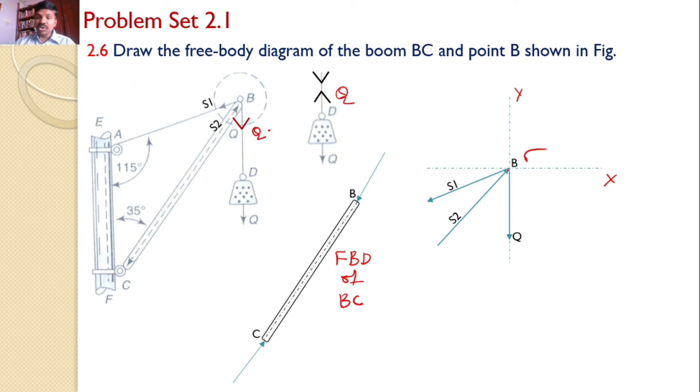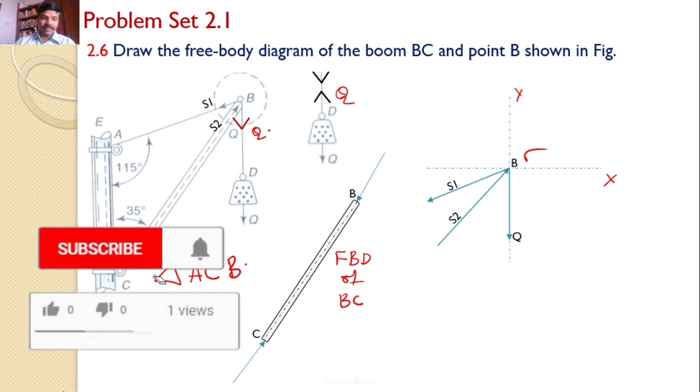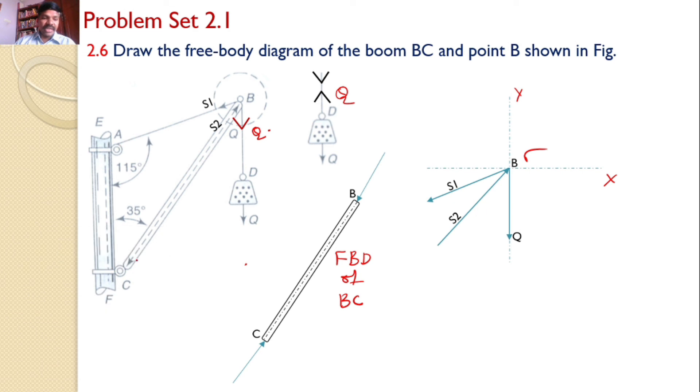We would also present the angles made by this S1, S2, and Q with the xy axis. For that, I will consider triangle ACB. In this triangle, now just consider the triangle ACB. In this triangle, this angle is given as angle A is given as 115 degrees, angle B is given as 35 degrees. Hence, what is this angle? This angle is 180 minus (115 plus 35).